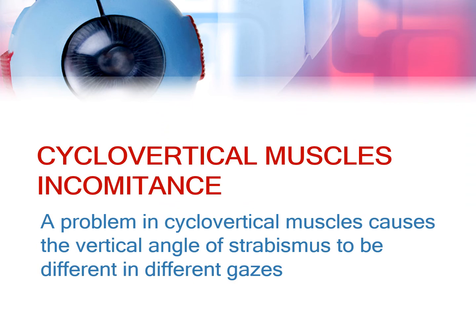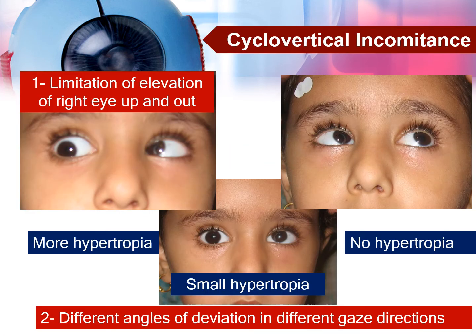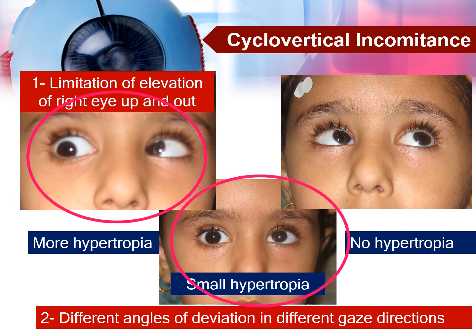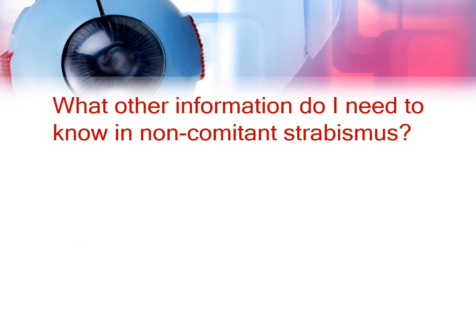In cyclo-vertical muscle incomitance, there is a problem in the cyclo-vertical muscles that causes the vertical angle of strabismus to be different in different directions of gaze. In this young girl, we can notice a limitation of elevation of the right eye in the abducted position, causing a small left hypertropia in the primary position. The hypertropia increases on gaze toward the direction of limitation and decreases on gaze toward the normal side.